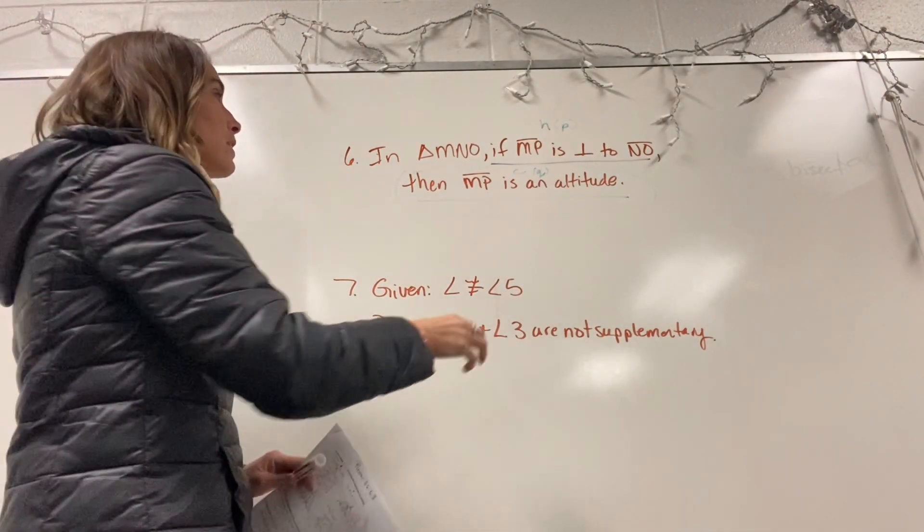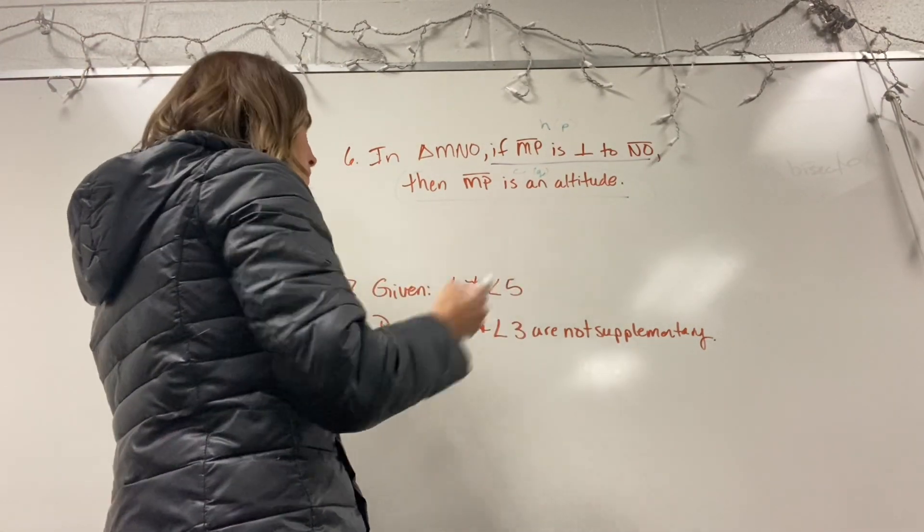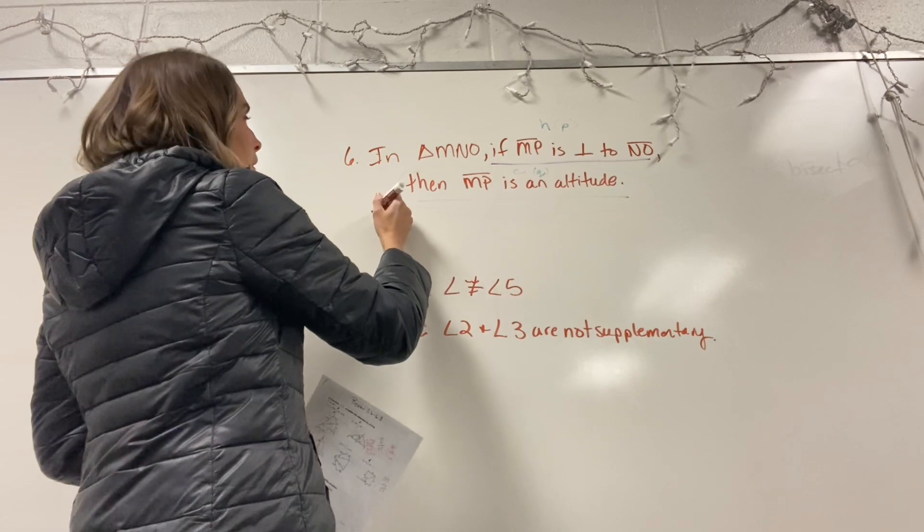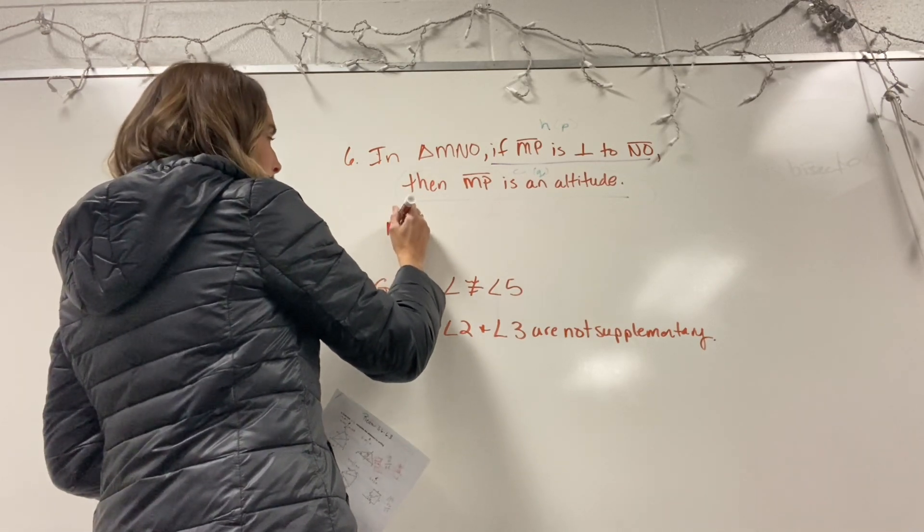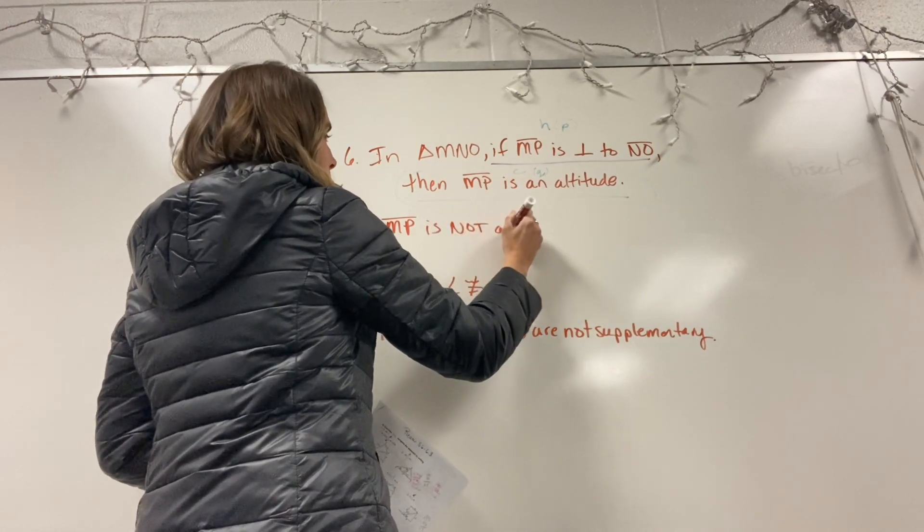So in this case, if the conclusion is MP, segment MP is an altitude, we're going to then, our first statement of our indirect proof is going to be MP is not an altitude.